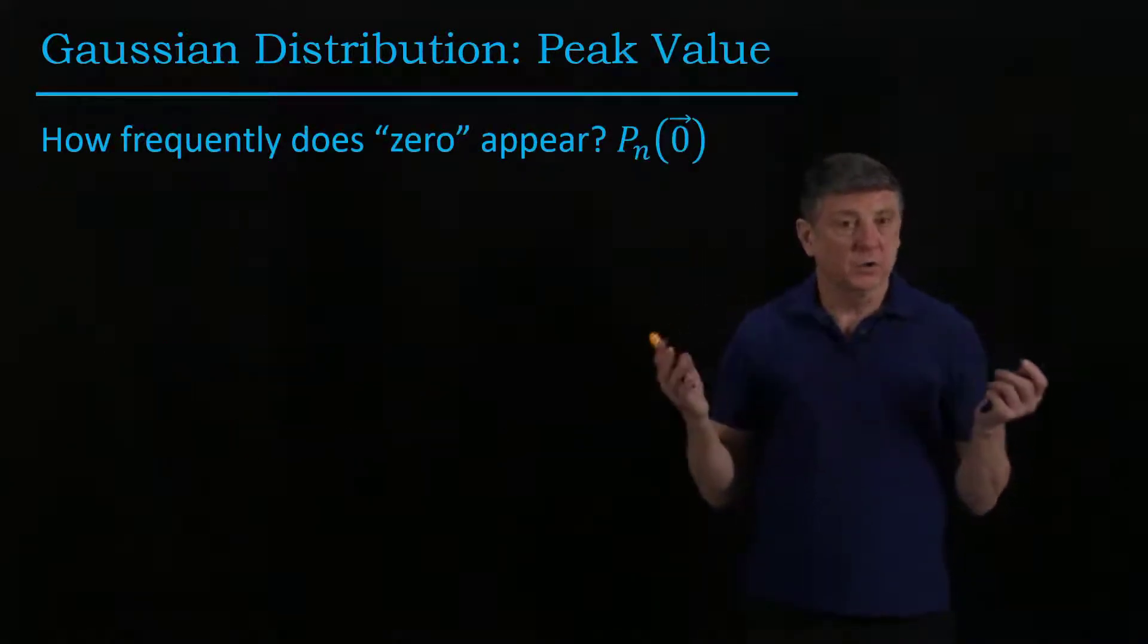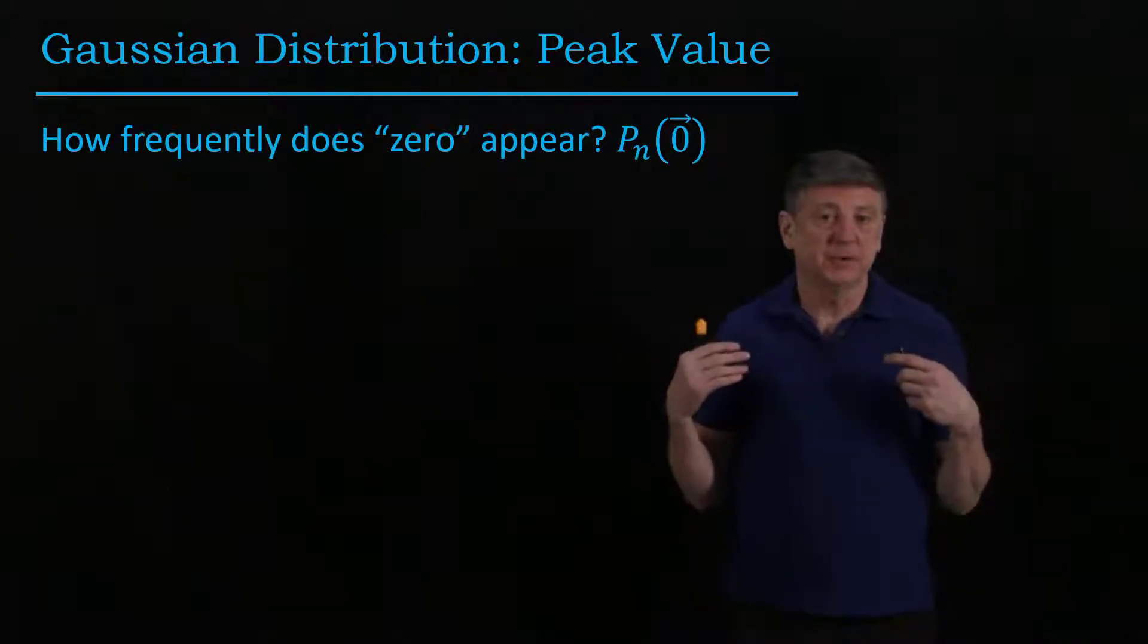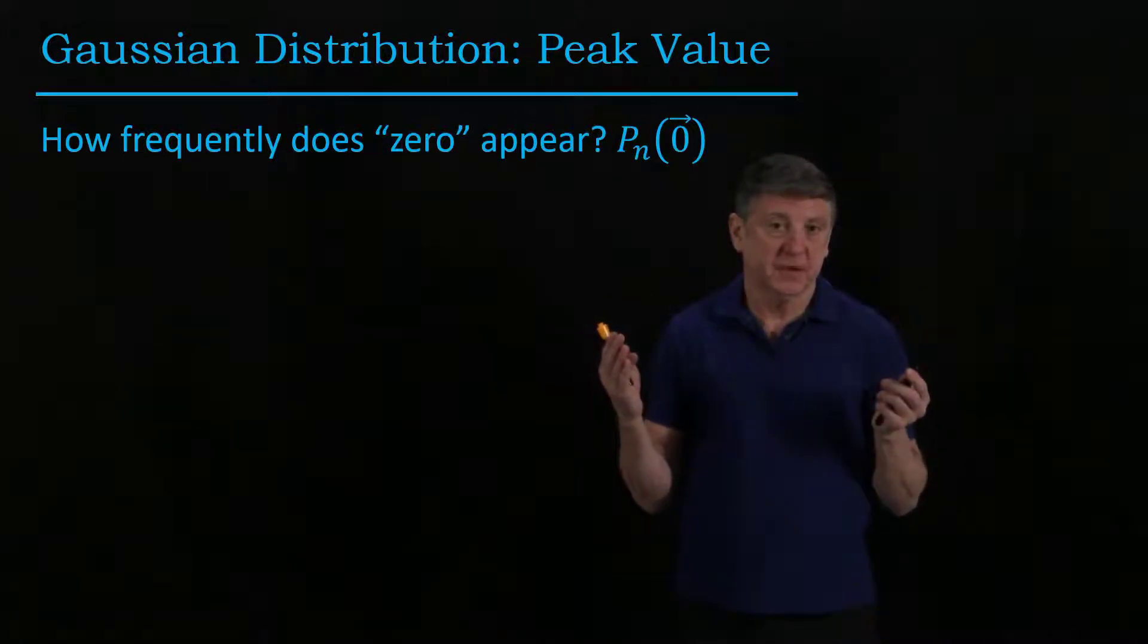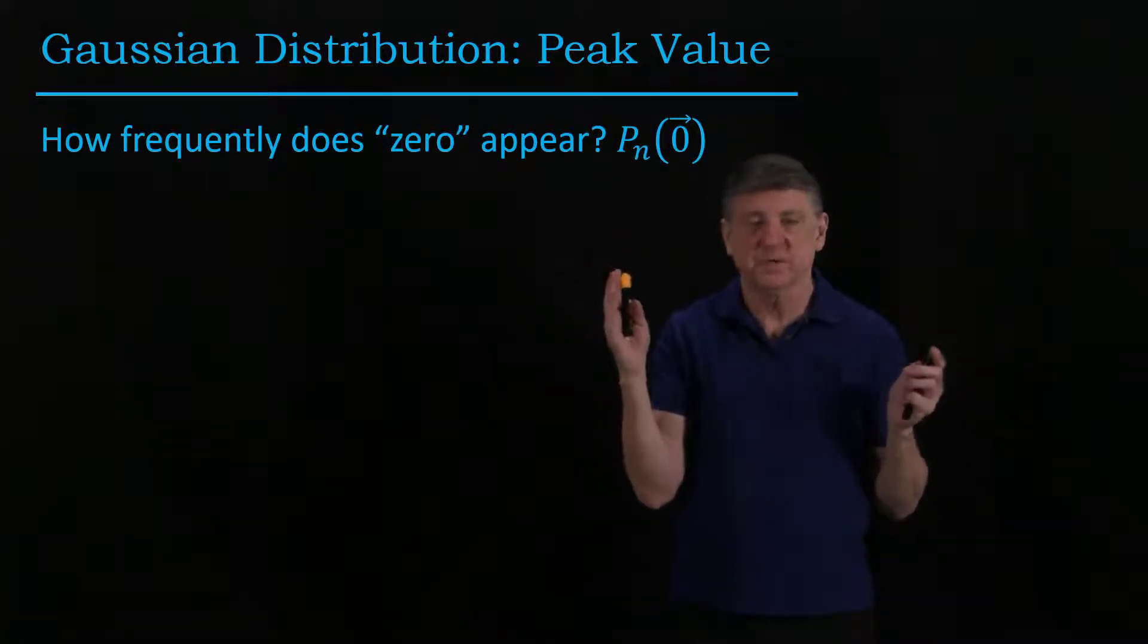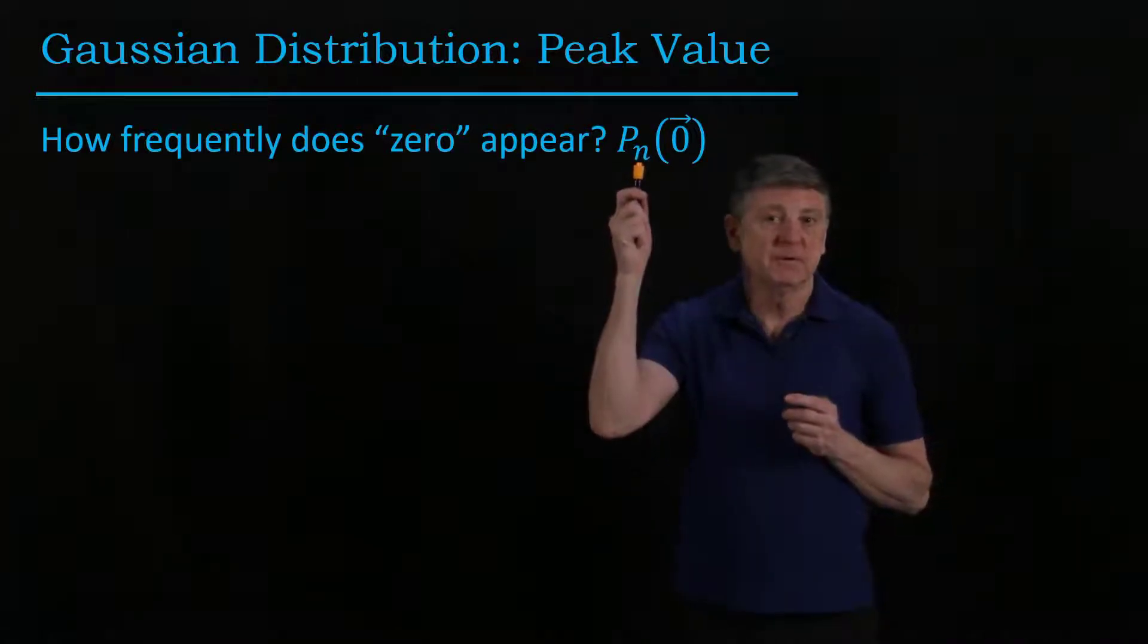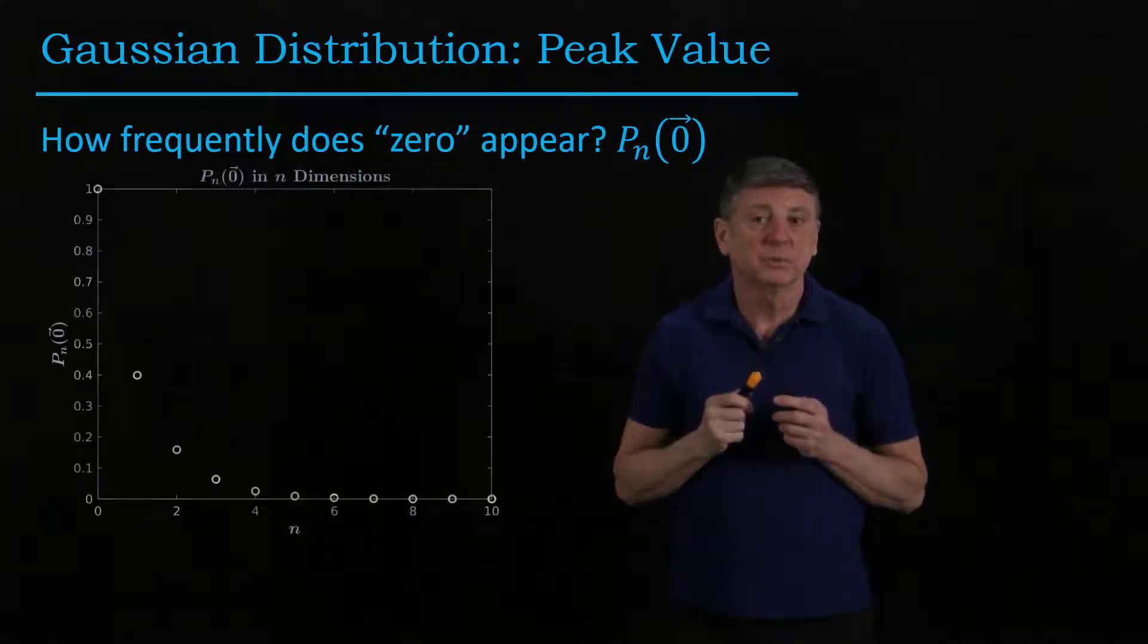Now one question that we might ask is how frequently does zero appear? So if it's one dimension, we have a very quick answer, and that is it's about 40%. But what happens when we vary the number of dimensions that we're exploring?